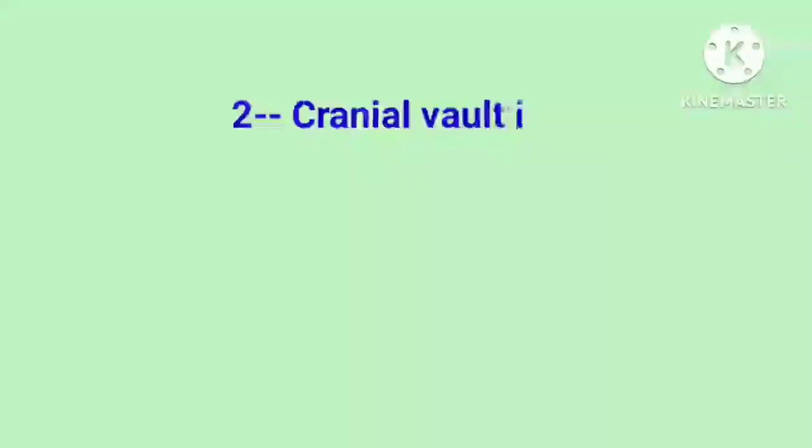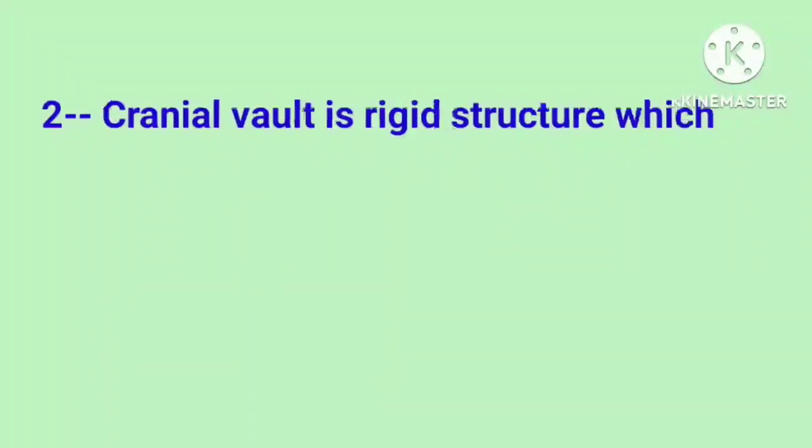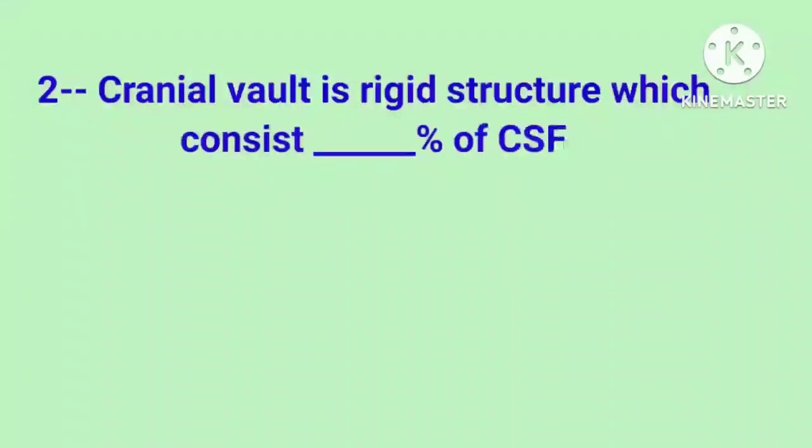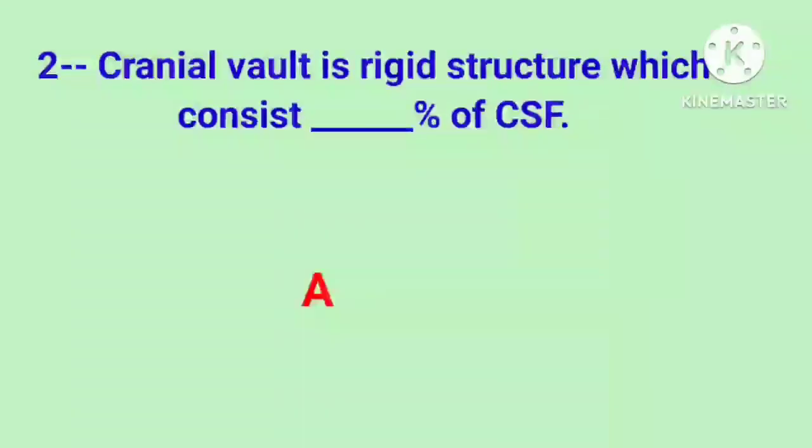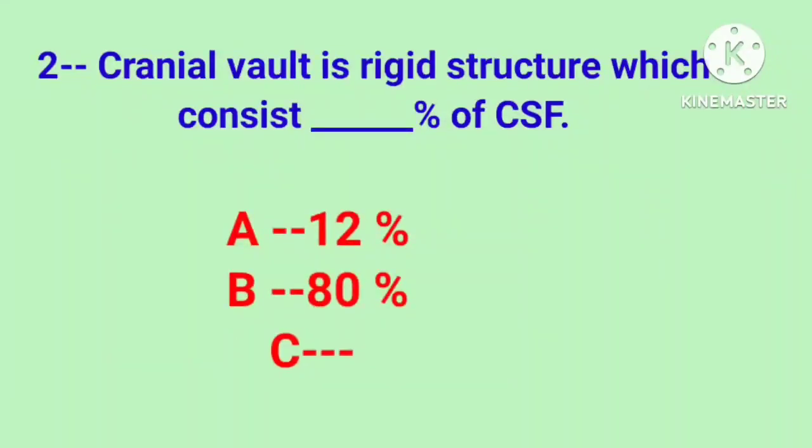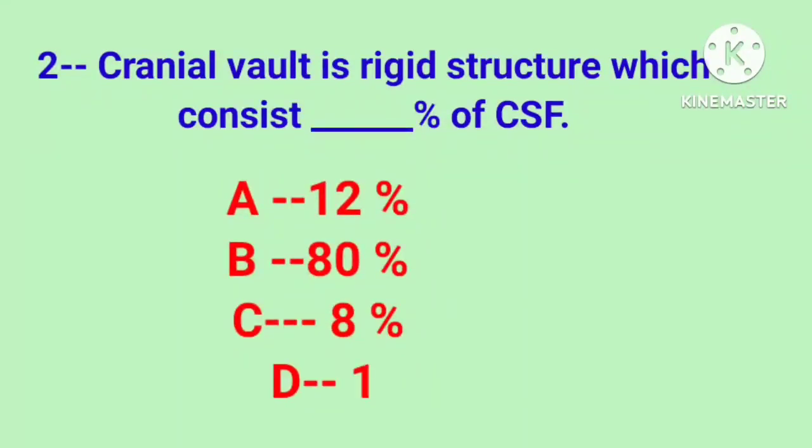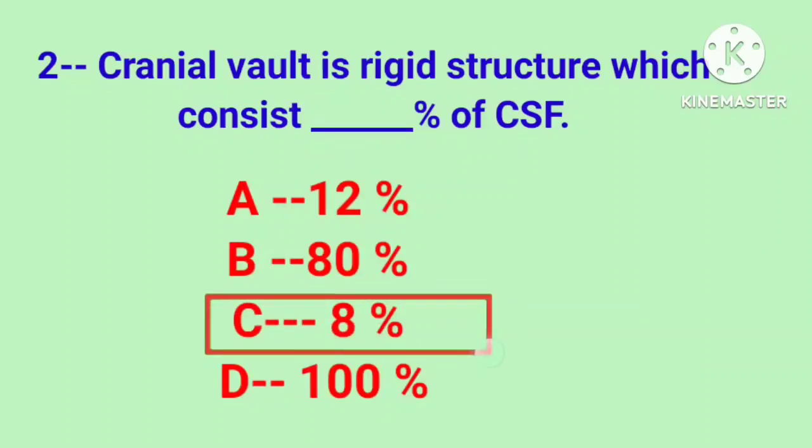Question number 2. Cranial vault is rigid structure, which consists of blank percent of CSF. Option A is 12%. Option B 80%. Option C 8%. Option D 100%. Correct answer is option C, 8%.